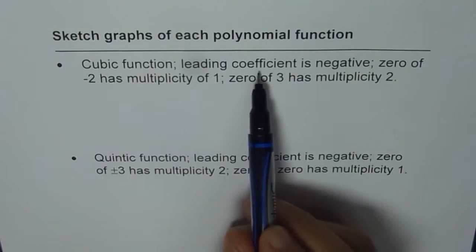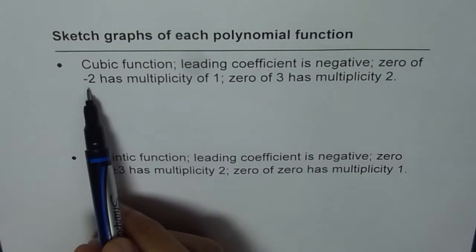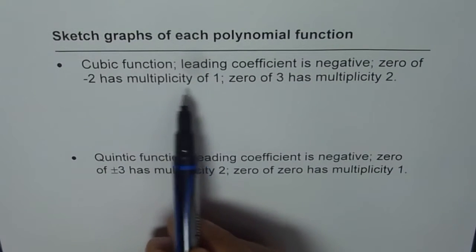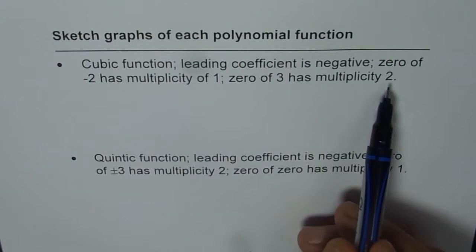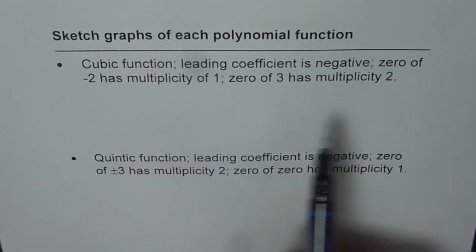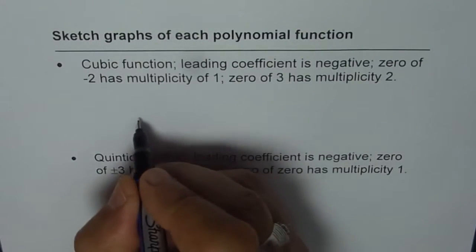Leading coefficient is negative. Zero of minus 2 has multiplicity of 1. Zero of 3 has multiplicity of 2. So there are two zeros. One is linear, the other one is quadratic.